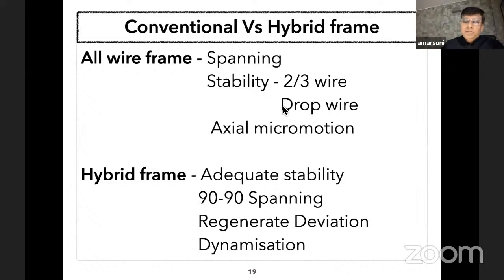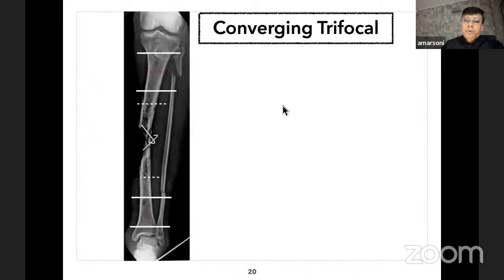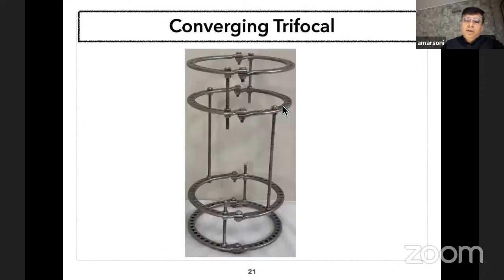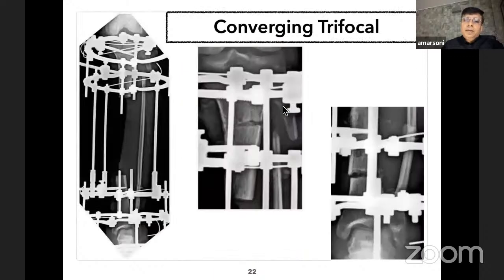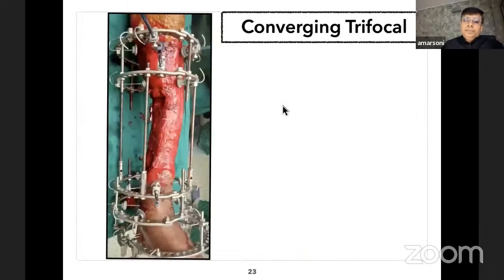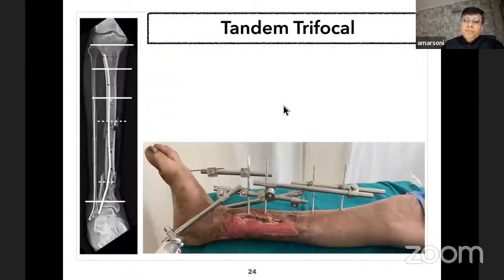This is a pre-operative planning of convergent trifocal. White dotted lines are the area of resection and red dotted lines are the corticotomy sites. This is how the frame will look. I insert two rods initially; once fixation is complete I add an additional rod. The corticotomy will be done between the first and second pin, and between the third and fourth pin. This is the post-fixation, post-corticotomy radiograph and the clinical picture of the converging trifocal frame.